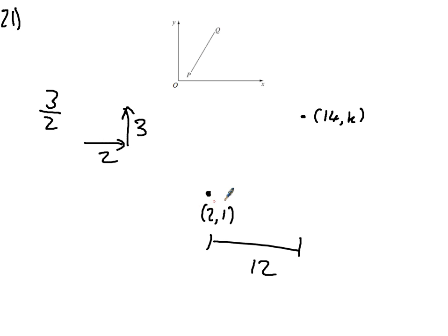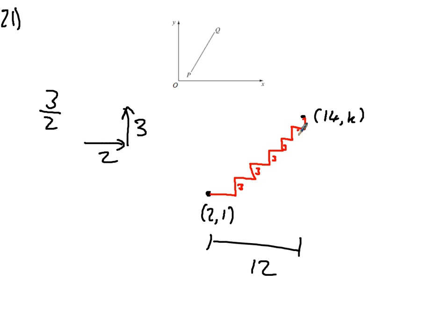If you think of it this way, the gradient between this line is 2 across and 3 up. So if we go 2 across, 3 up, repeated 6 times, that's 2×6 = 12 across, which is exactly the gap. I've then gone 3 up six times, which gives me 18 moves up.